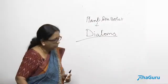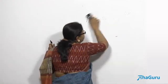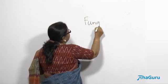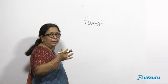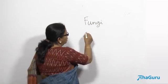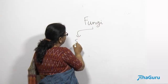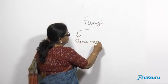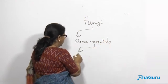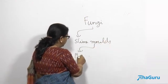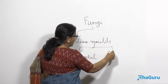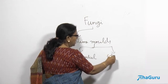Then we have fungi-like protists. Fungi-like protists are basically saprophytic — they are the major decomposers. One group is called slime molds. Slime molds are of two types: one is plasmodial slime mold or acellular slime mold, and the other is called cellular slime mold.